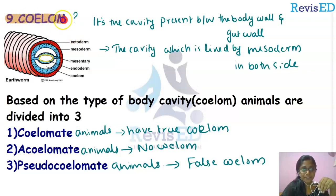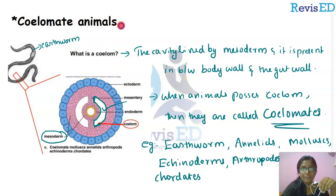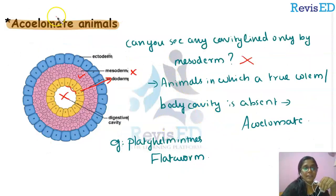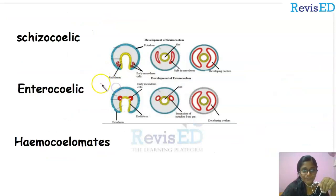In the last session we were talking about coelom — the body cavity which is covered by the mesoderm. Based on the body cavity there are three types: coelomate animals having a true coelom, acoelomate having no coelom, and pseudocoelomate having a false coelom. We covered all of this in the last session, so go to the playlist and watch that video.